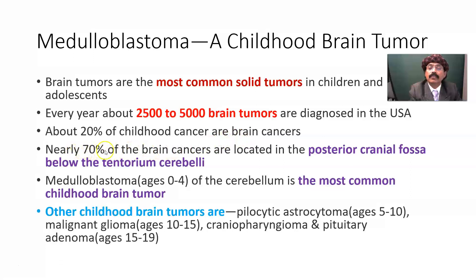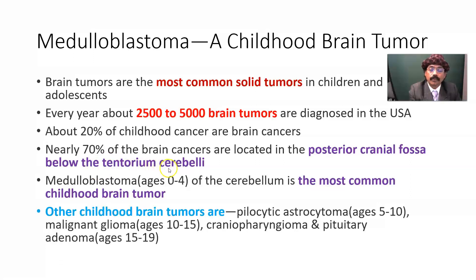Nearly 70% of brain cancers are located in the posterior cranial fossa, below the tentorium cerebelli. The tentorium cerebelli is a fold of dura mater that separates the occipital lobe of the brain from the cerebellum, and also the temporal lobe of the brain from the cerebellum.